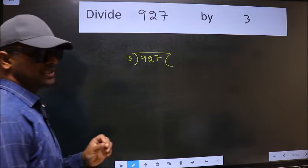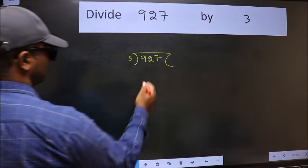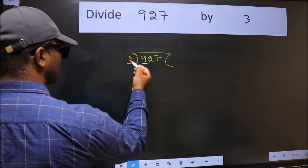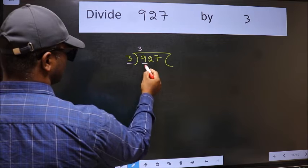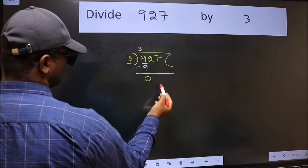This is your step 1. Next. Here we have 9 and here 3. When do we get 9 in 3 table? 3 threes is 9. Now we should subtract. We get 0.